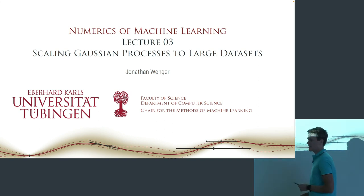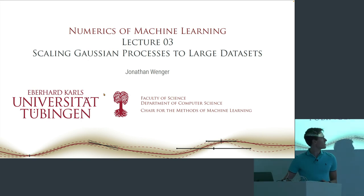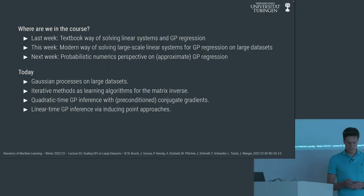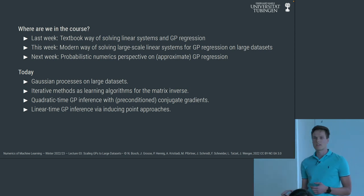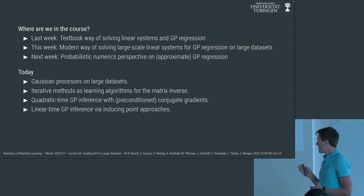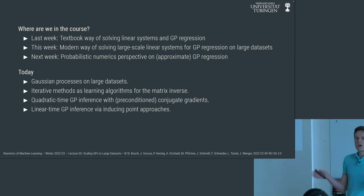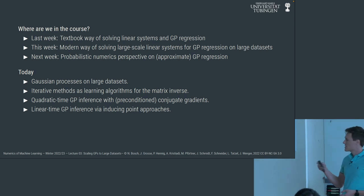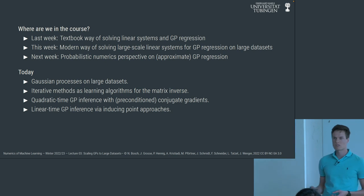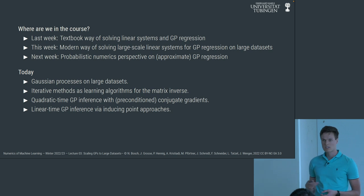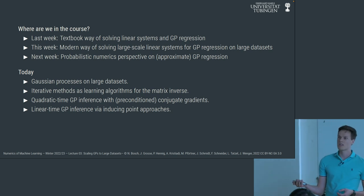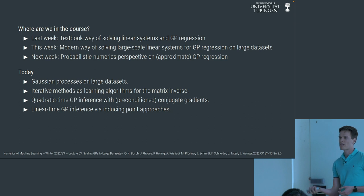What we'll see today is that we'll use a lot of the tools developed last week. In particular, last week we talked about the textbook way to solve linear systems using the Cholesky decomposition and applied that to GP regression. Today we are developing the modern way to solve such linear systems with kernel matrices and apply that to scale Gaussian processes. Then next week, we'll give you the probabilistic numerics interpretation.